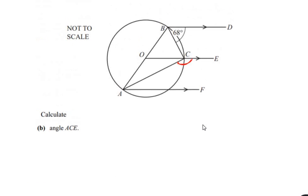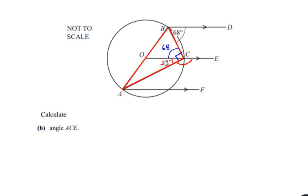Now let us see how we can use this theorem in solving the given example. We can see that diameter AB makes an angle at point C, which lies in the semicircle — that means angle ACB is 90 degrees. In part A we had seen that angle B was equal to angle C due to alternating angles of the parallel lines, giving us 68 degrees. Since the total angle ACB is 90 degrees, we subtract 68 from 90 to get the remaining part of angle C, which is 22 degrees.